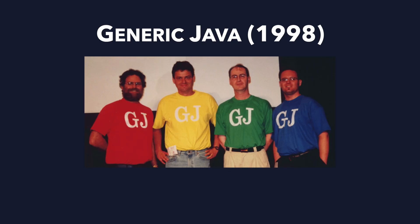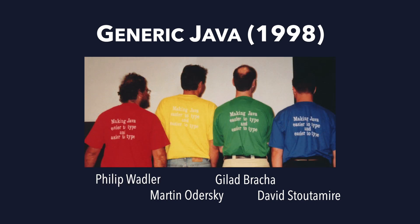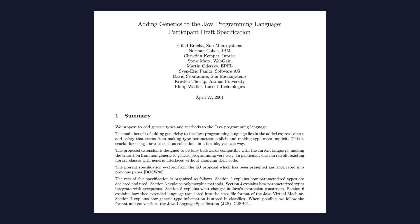Generics as we know them today were first available in Generic Java, a community mod released in 1998 by Jilad Bracker, Martin Odisky, David Stoutsmeyer, and Philip Wadler. Jilad and David worked for Javasoft, which was the part of Sun responsible for developing Java, although the project was initially independent. In 1999, Jilad proposed that generics were added to Java based on the ideas from Generic Java, and they were eventually officially added to Java in 2004 with the release of Java 5.